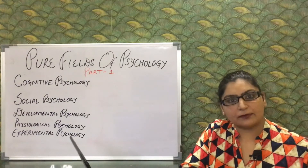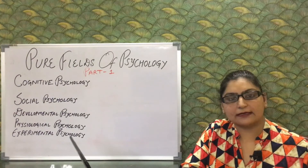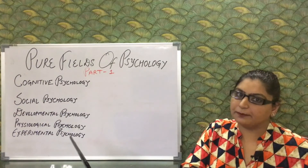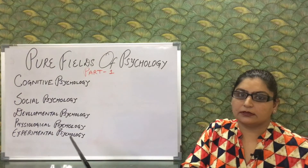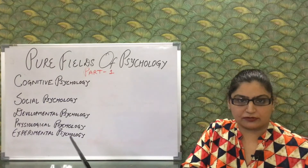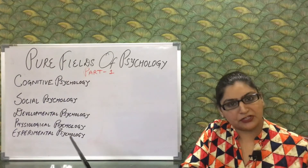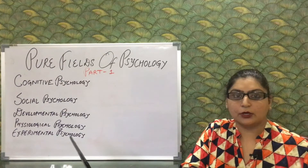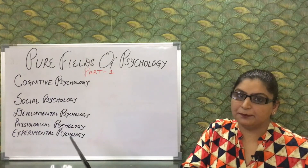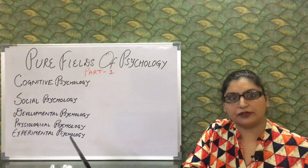The main focus of experimental psychology is on variable relationships. Experimenters manipulate some variables, control others, and observe the effect of the independent variable on the dependent variable. A variable manipulated by an experimenter is the independent variable; the variable on which the effect is being studied is the dependent variable.